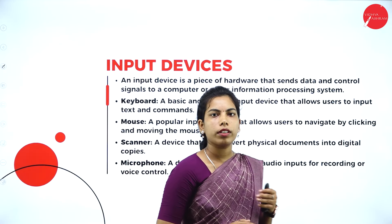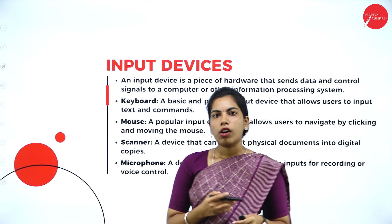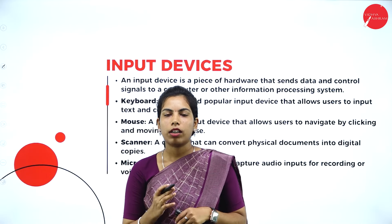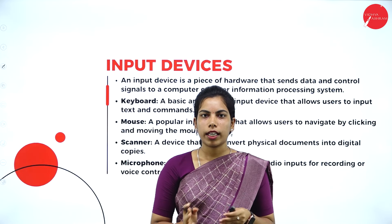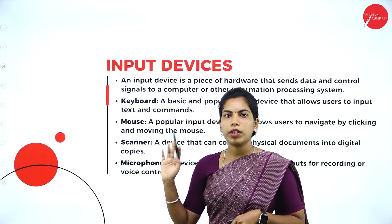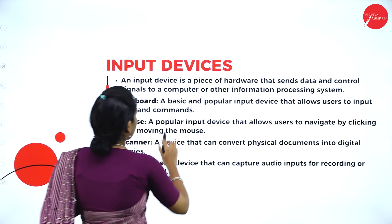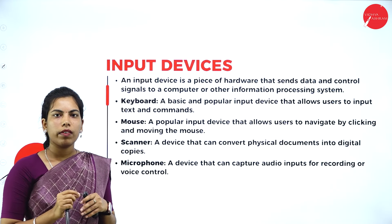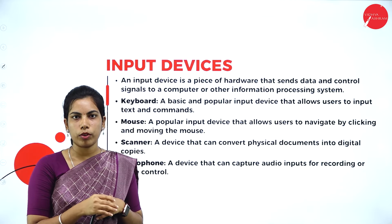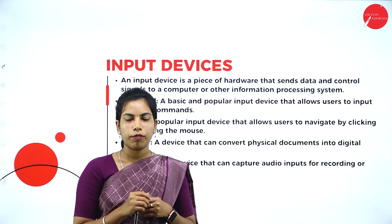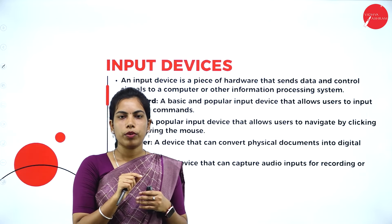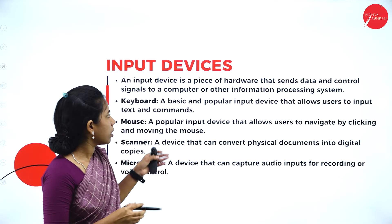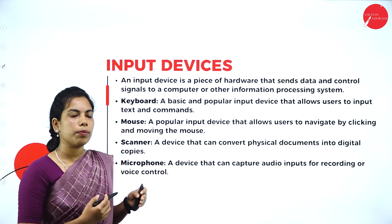In the next slide, we see input and output devices. We need to know what is meant by input. As already explained in the block diagram, when we give input - raw data or information - through some hardware equipment, those are called input devices. An input device is a piece of hardware that sends and controls signals to the computer. Without an input device, we can't pass parameters or information to the computer. For example, if your cell phone's touch is not working - touch is an input - without it you can't open any application.